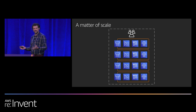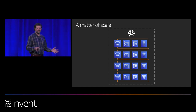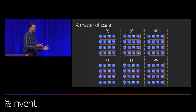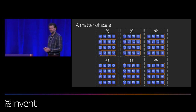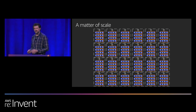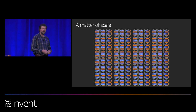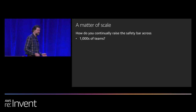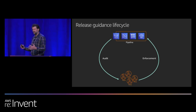The other cultural element is the scale of the organization. When we talk about DevOps at a single service team level, a team operating 10 or 20 services can make its own process decisions and learnings. Scaling up to six teams, they can coordinate best practices. But at a large scale, it becomes impossible for service teams to coordinate directly. The question is: how do we continually raise the safety bar across thousands of teams, tens of thousands of software services, and hundreds of thousands of deployments per month? The answer is the release guidance framework.